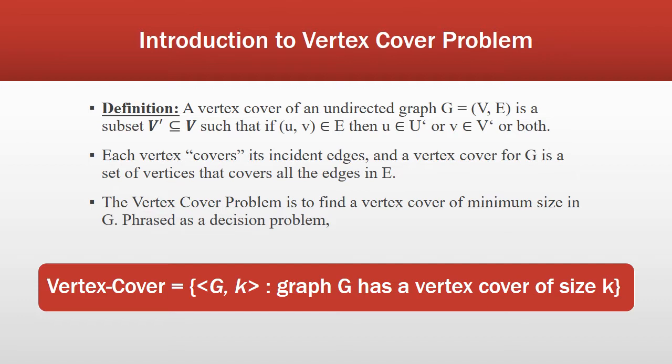The main objective of this problem is: given an undirected graph, the vertex cover problem is to find the minimum size vertex cover. This problem is also known as the node cover problem. The decision problem is represented as VERTEX-COVER = {⟨G, k⟩} where the graph G has a vertex cover of size k.